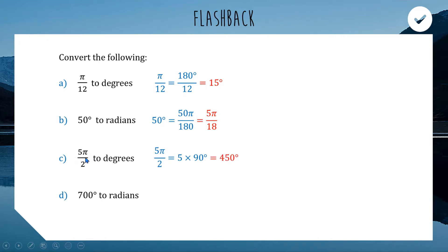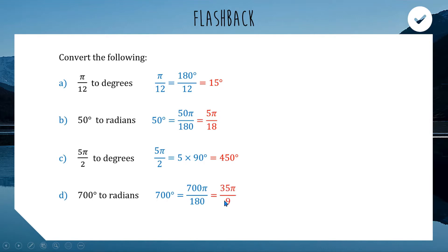For part d, 700 degrees to radians: we follow the same process and write 700π/180. Simplifying 700/180 gives 35/9, so the answer is 35π/9.